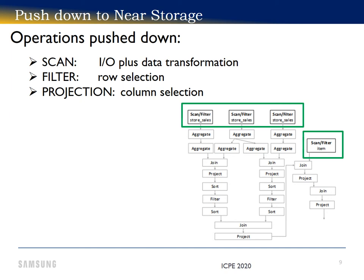These operations can be pushed down with little change to the database engine software. For some queries, they are the bottleneck. For queries with high scan ratio and high selectivity in their filter projections, near-storage optimization benefits will be really big.